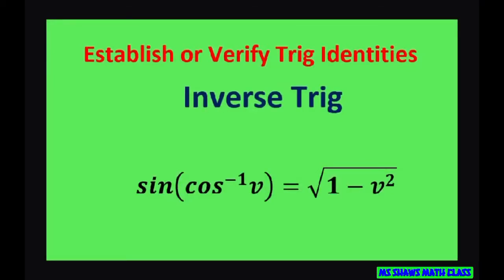Hi everyone. We're going to verify this trig identity. Namely, we're going to show that sine of inverse cosine of v equals square root of 1 minus v squared.